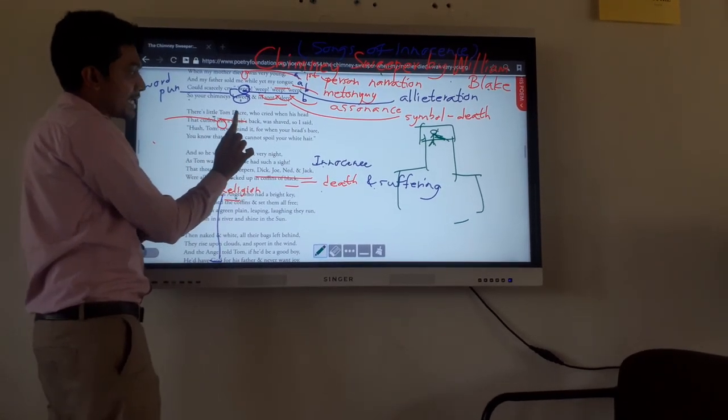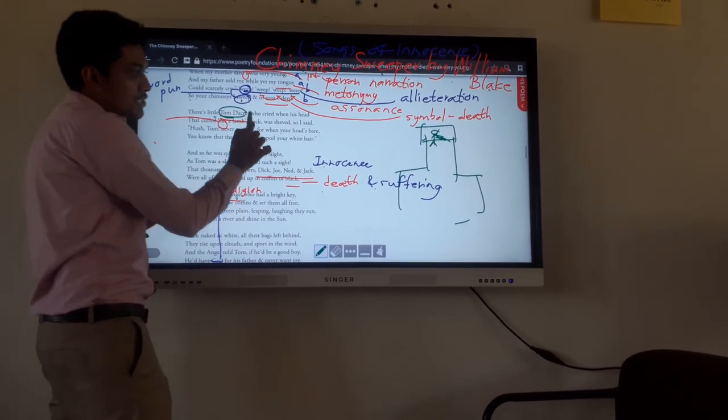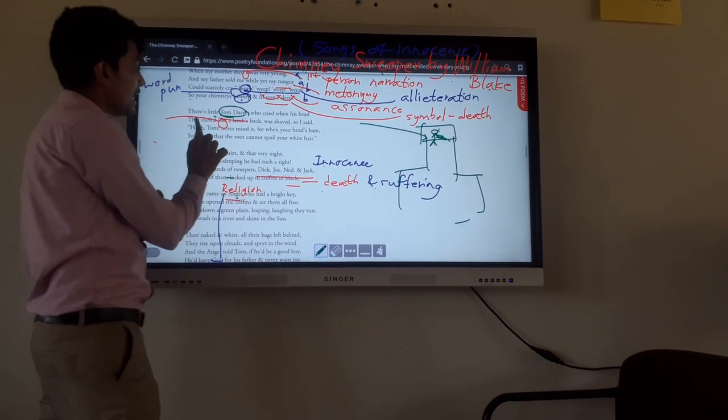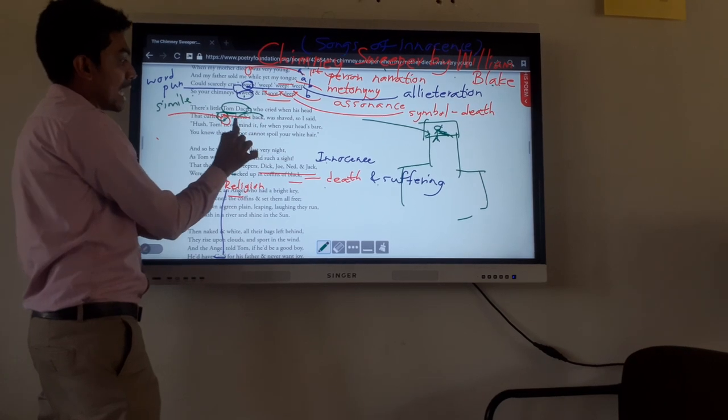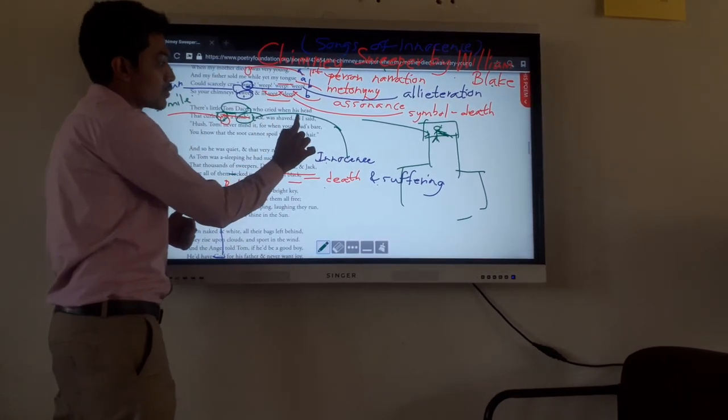There is a little Tom Dacre who cried when his head, that curled like me - with a simile, like a lamb. Lamb symbolizes innocence. His back was shaved, so I said.